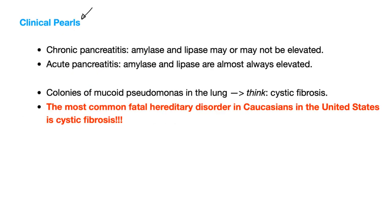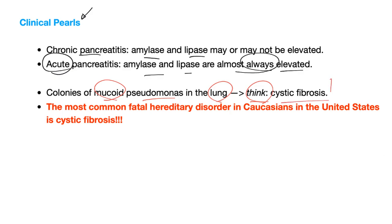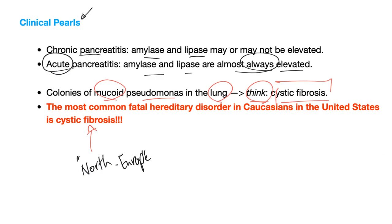Some clinical pearls: in chronic pancreatitis, amylase and lipase may or may not be elevated. But in acute pancreatitis, amylase and lipase are almost always elevated. Colonies of mucoid Pseudomonas in the lung lead to thick secretions — this is cystic fibrosis. The most common fatal hereditary disorder in Caucasians in the United States is cystic fibrosis, affecting people of northern European ancestry.